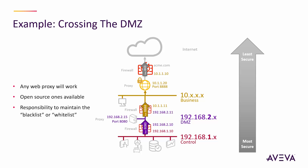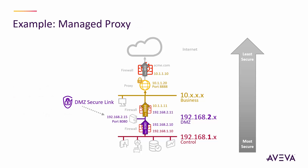Any web proxy will work; there are some open source ones available. The big challenge with using a proxy like this is that you have to take on the responsibility of managing the blacklist of blocked sites or the whitelist of allowed sites, and keep it up to date. To address those problems, we created DMZ Secure Link — a free download from Aviva Insight. Aviva takes on the responsibility of managing the whitelist, keeping it as narrow as possible to still support Aviva Insight. We block things like Windows updates and malware sites — basically anything not strictly required for Aviva Insight. We digitally sign that whitelist to prevent tampering and automatically update it as needed, so you don't have to worry about it.